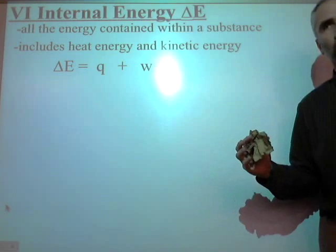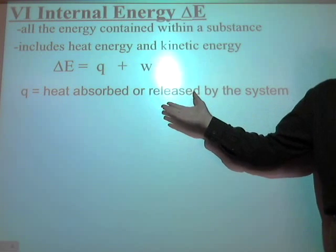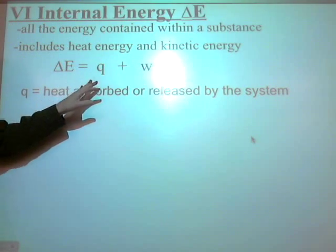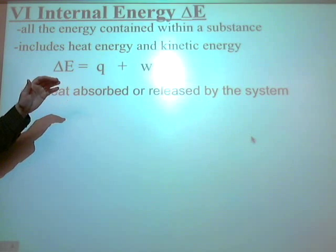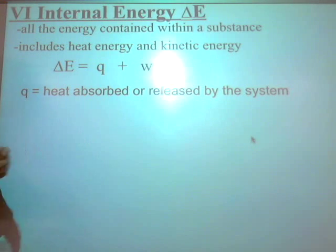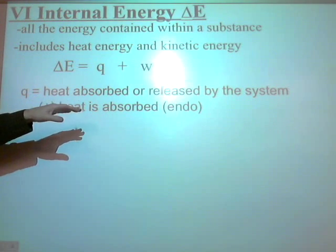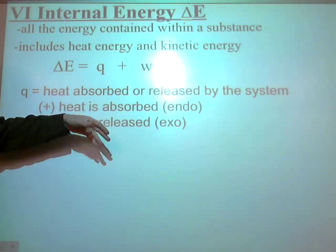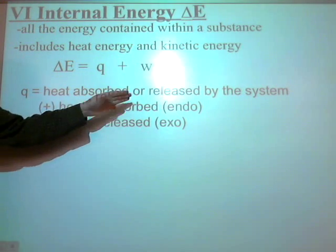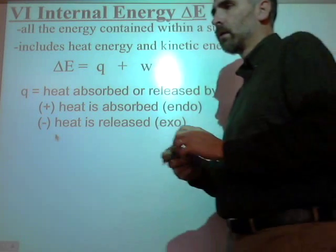Here comes the difficult part as far as terminology. First of all, the Q we do know already is the heat that's absorbed and released by the system. We know how to do that. What do we call it if it's negative? If Q is negative, what is that? Exothermic. And heat is released. The positive is endothermic and absorbed. Negative, the heat is released and it's exothermic.